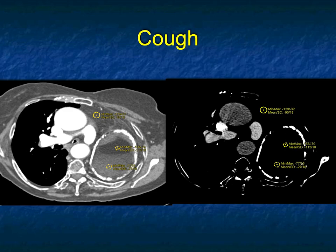What about this? Well, this patient had a cough and there's something in the left lung. If you look hard, right in the middle, it measures minus 113 Hounsfield units — that's fat. There's rim calcification and there's loss of volume in the left lung.